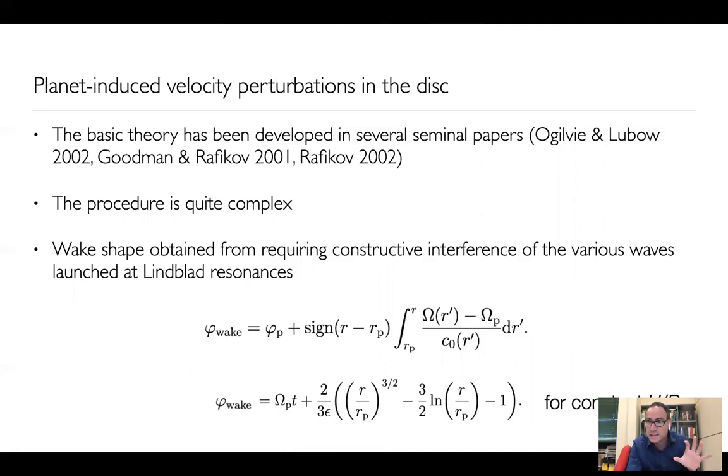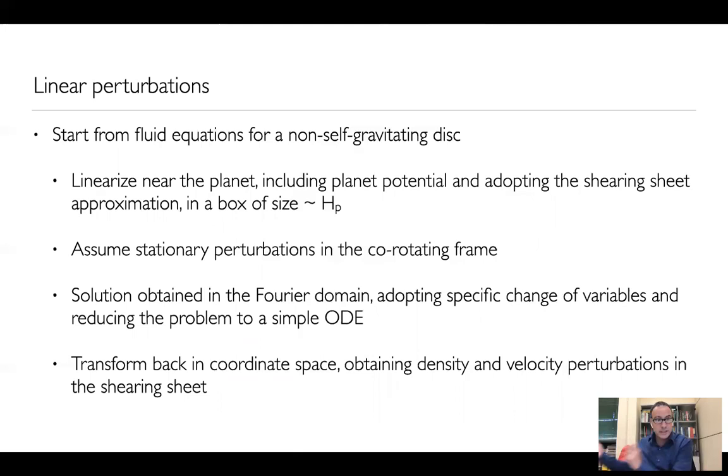Now, the procedure is quite complicated. If you're not Roman Rafikov, it's not easy to get it. So I'll just give you a few schematic views of how this is done without going into technical details. First of all, it's easy to obtain the shape of the wake by requiring that the various waves launched at the different corotation Lindblad resonances by the planet interfere constructively. And you can see here an expression for the wake. In particular, the second line refers to a constant opening angle in the disk. Now we divide the problem in two steps. First, the linear part and then the nonlinear part.